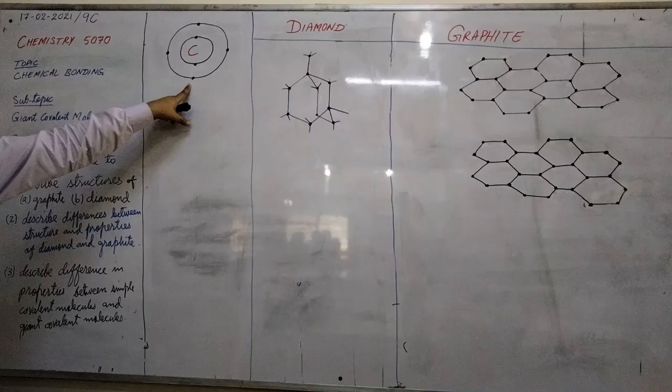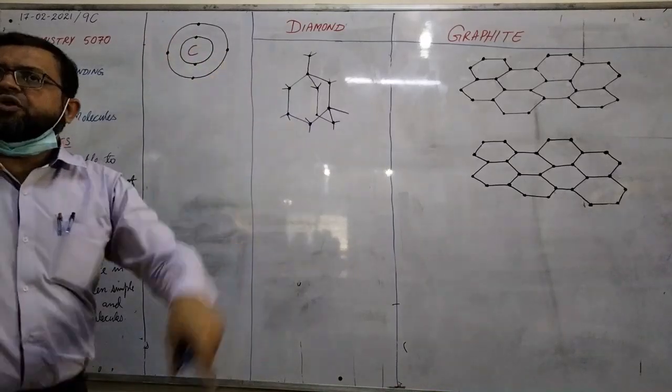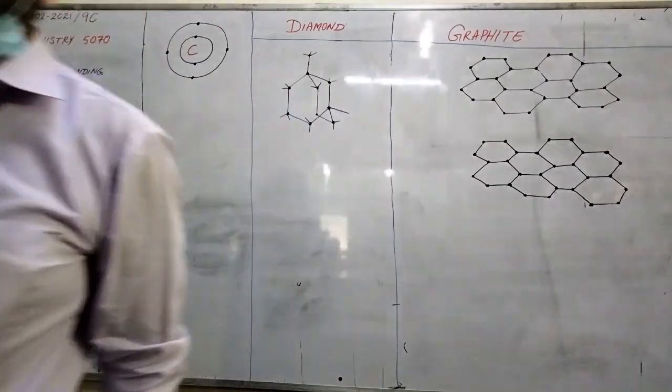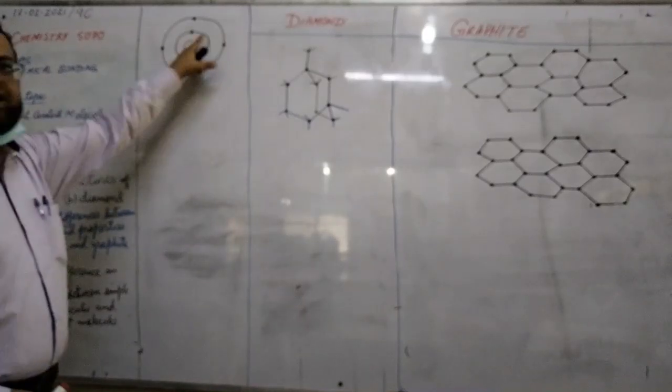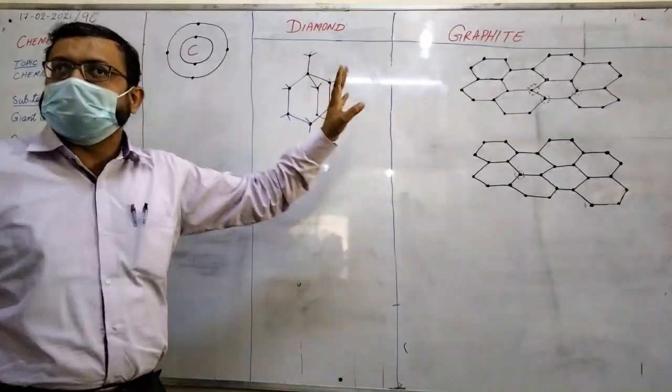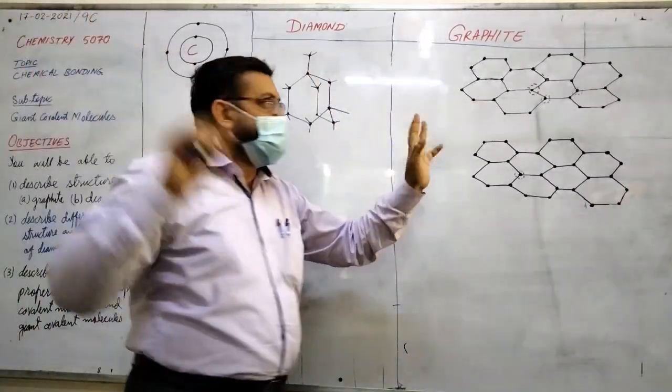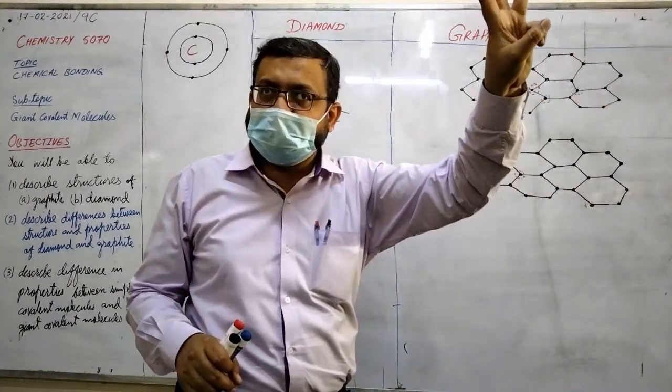How do you know? Because there are four valence electrons in a carbon atom, so it belongs to group 4 of the periodic table. Every carbon atom can form four single covalent bonds. In diamond, each carbon atom is forming four single covalent bonds, and in graphite, each carbon atom is forming three single covalent bonds.